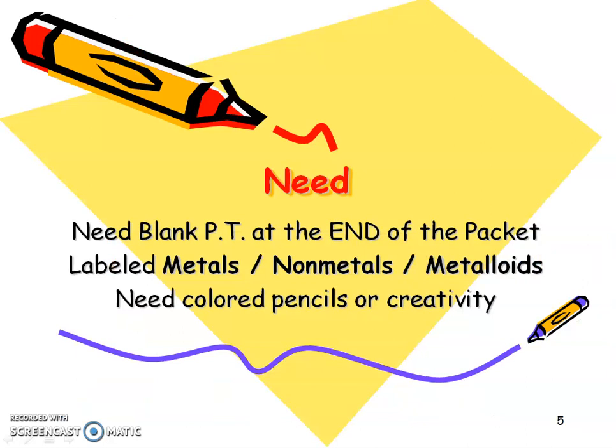You're going to need the blank periodic table at the end of your packet, labeled metals, non-metals, metalloids. Grab some colored pencils or crayons. Please do not use markers because they'll bleed through to the other side — we're also going to do coloring on the blank periodic table on the back. If you only have a pencil or pen, I'll show you how to be creative to understand your periodic table.